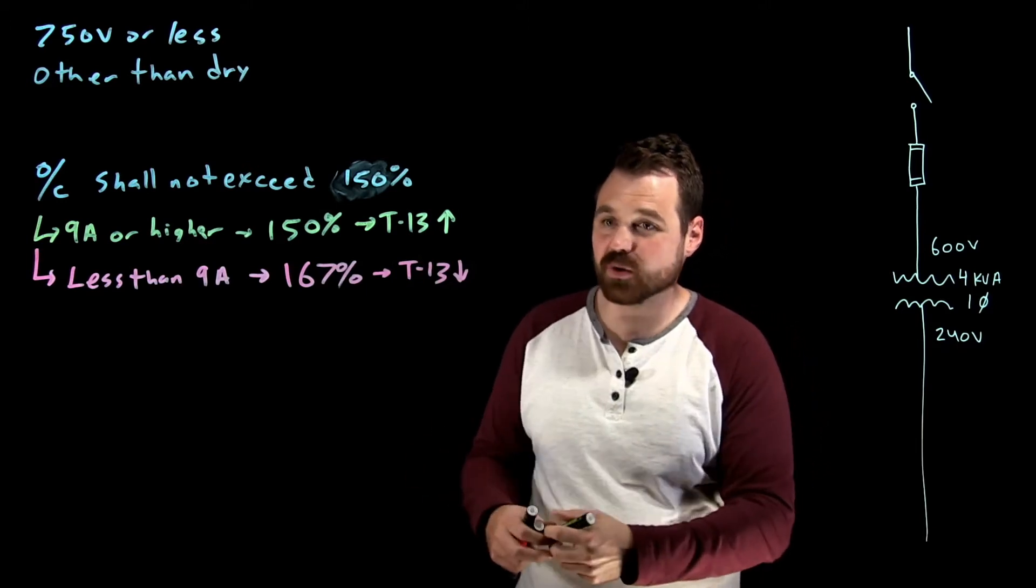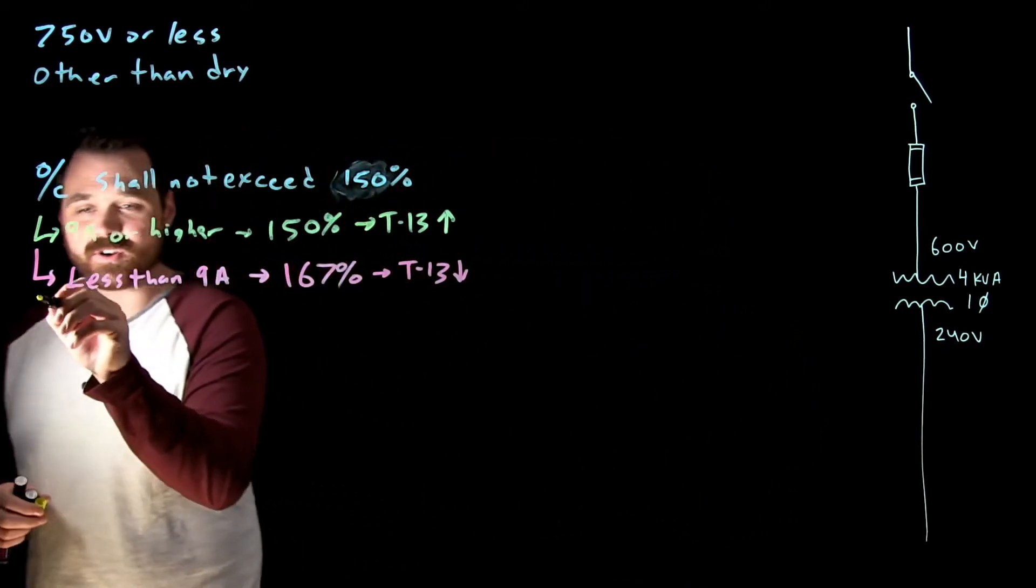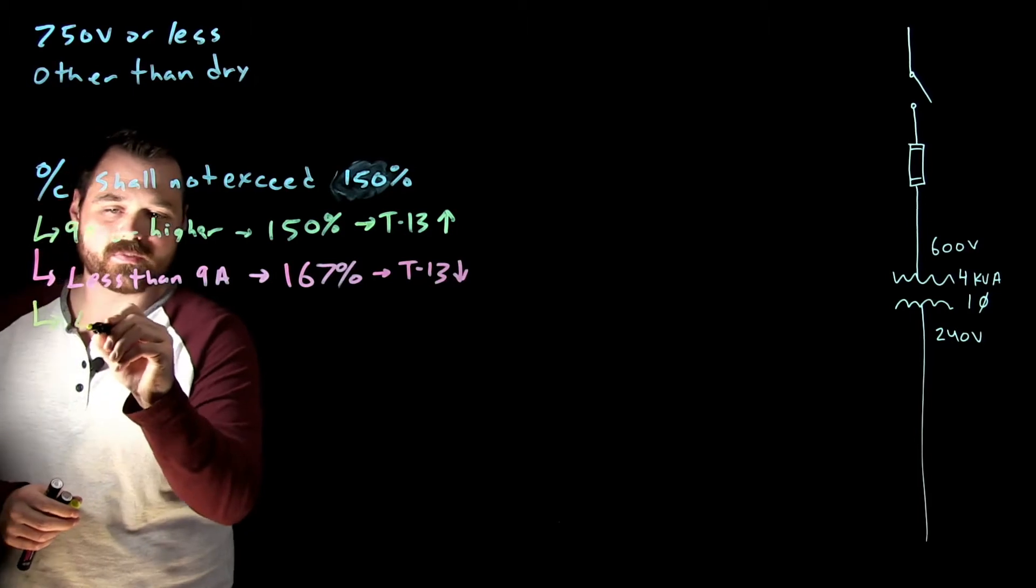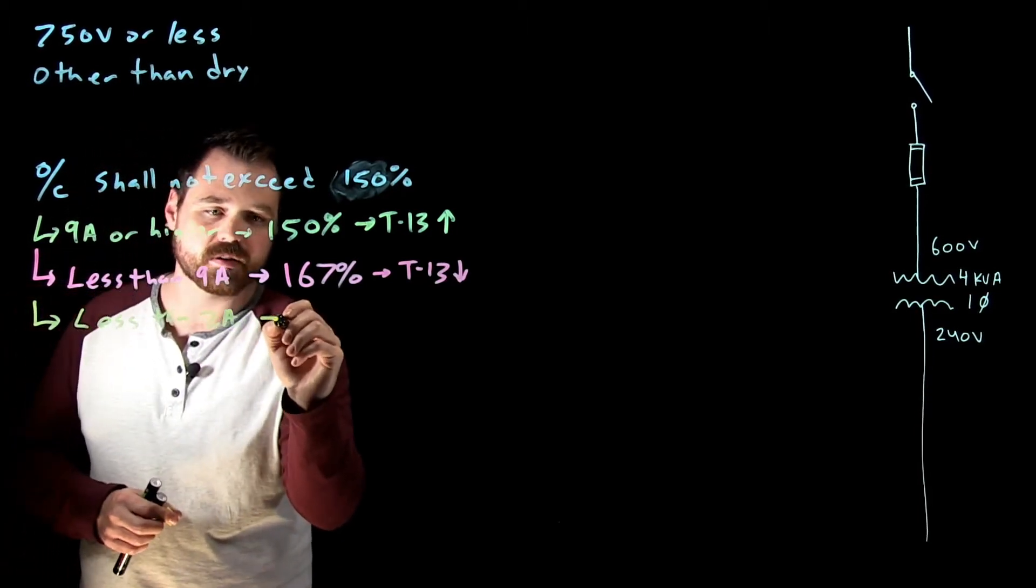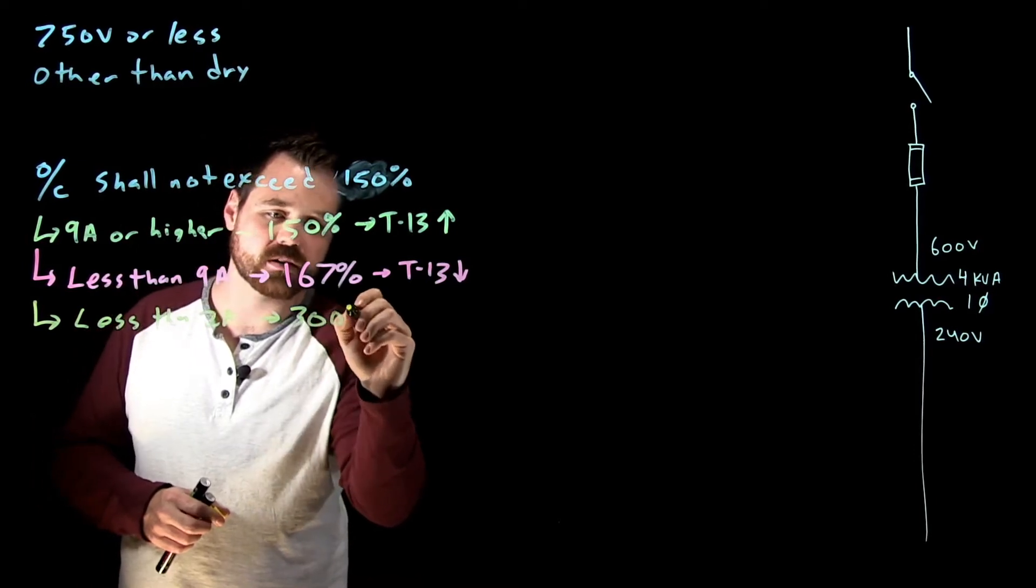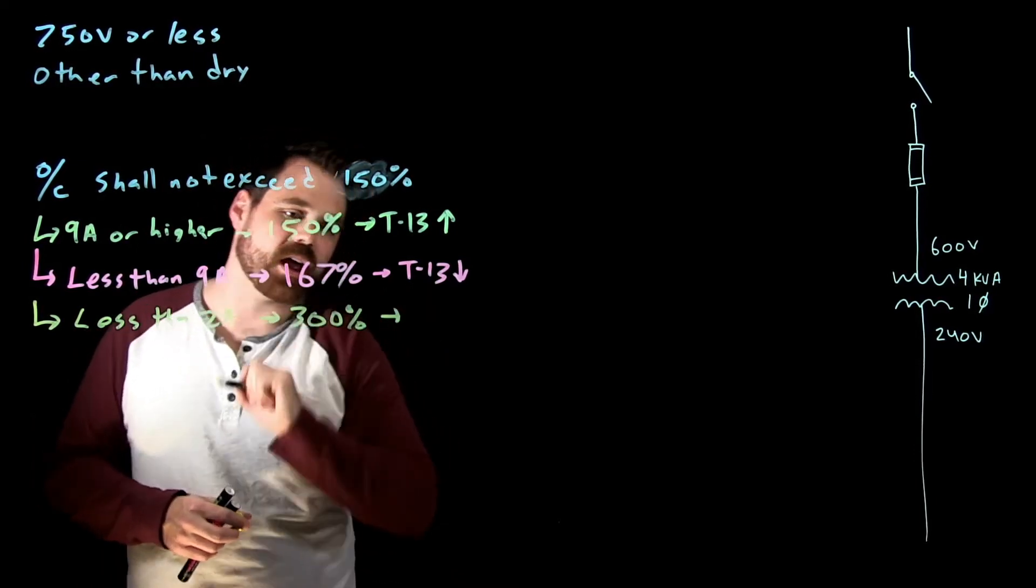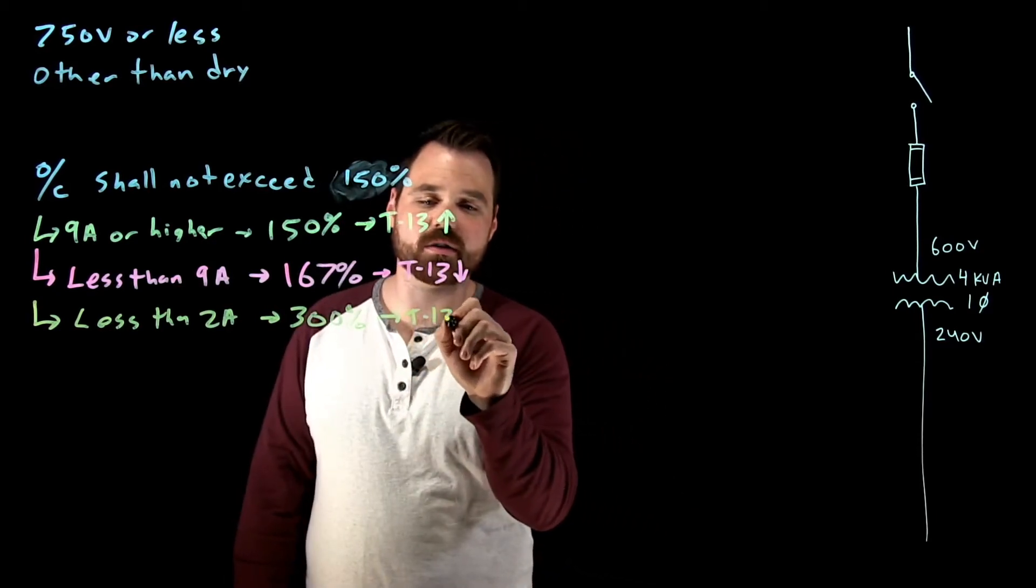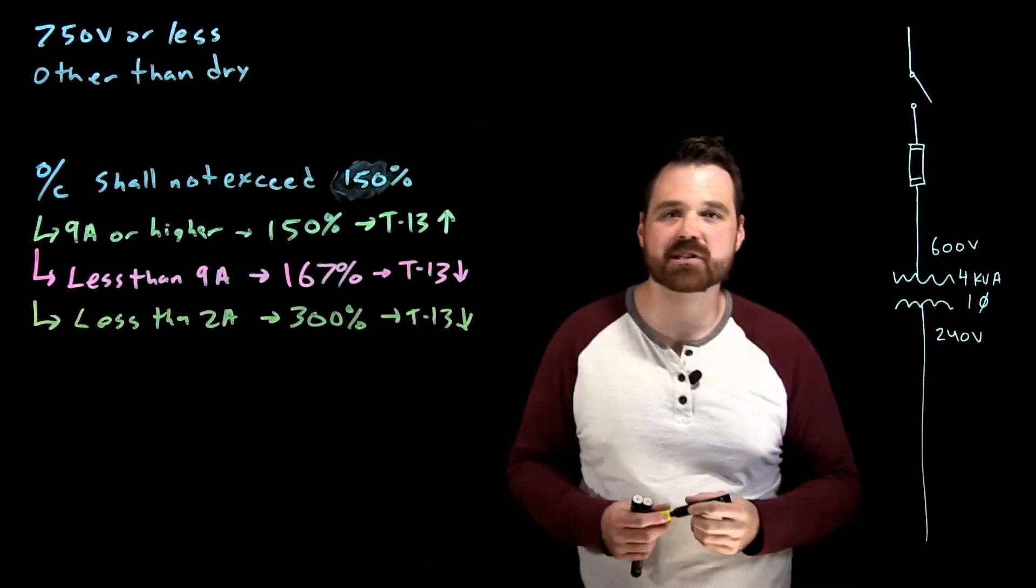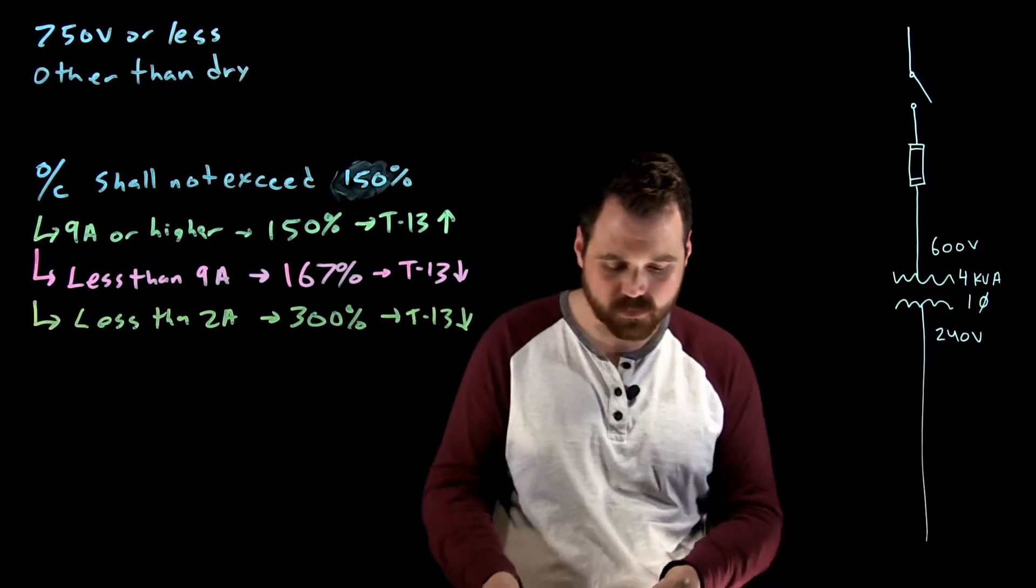Then the very last rule says if you're less than two amps, it's 300%. And if 300% isn't available when you're sizing your OC, you actually go down to the next smaller size, right?